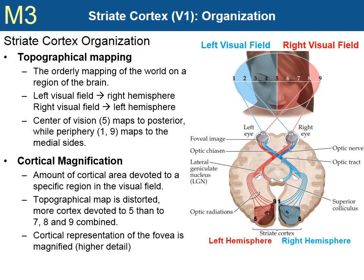The second characteristic is that the amount of cortical area corresponding to each region of the visual field differs — that is, the cortical map is distorted. The cortical area that responds to the center of vision, area five, is much larger than the cortical area devoted to the other areas. This is known as cortical magnification. The cortical area that responds to the fovea, the center of vision, is larger because more neurons are required for high-detail visual processing. In fact, the area corresponding to the fovea is larger than the areas corresponding to the periphery.